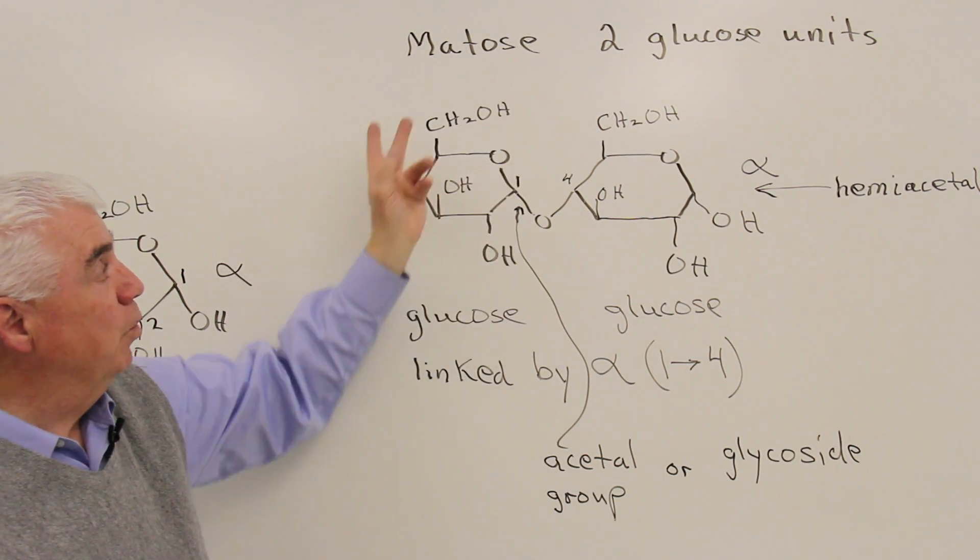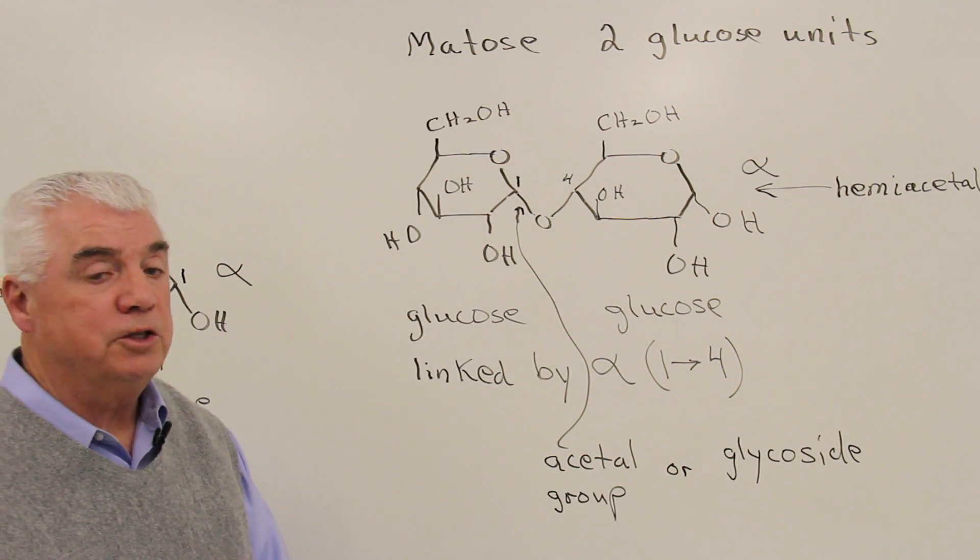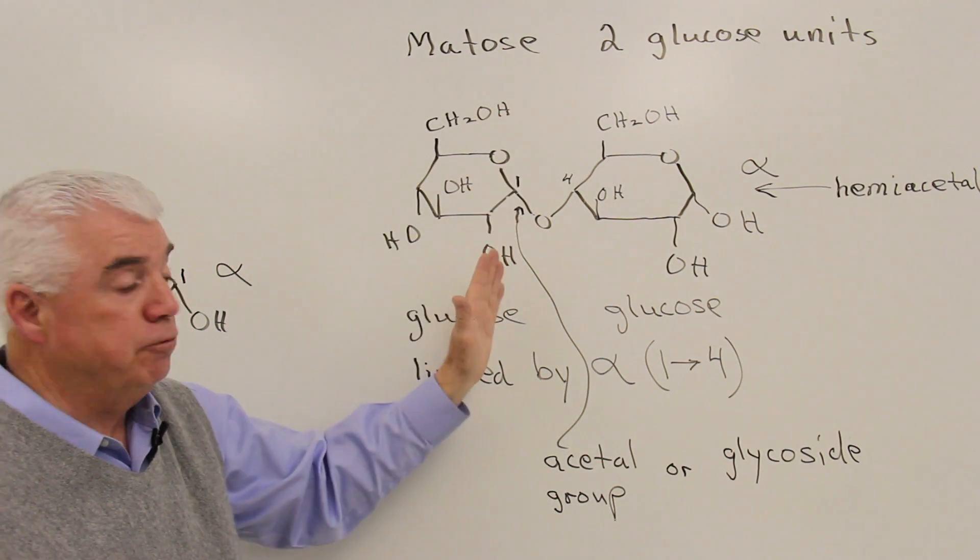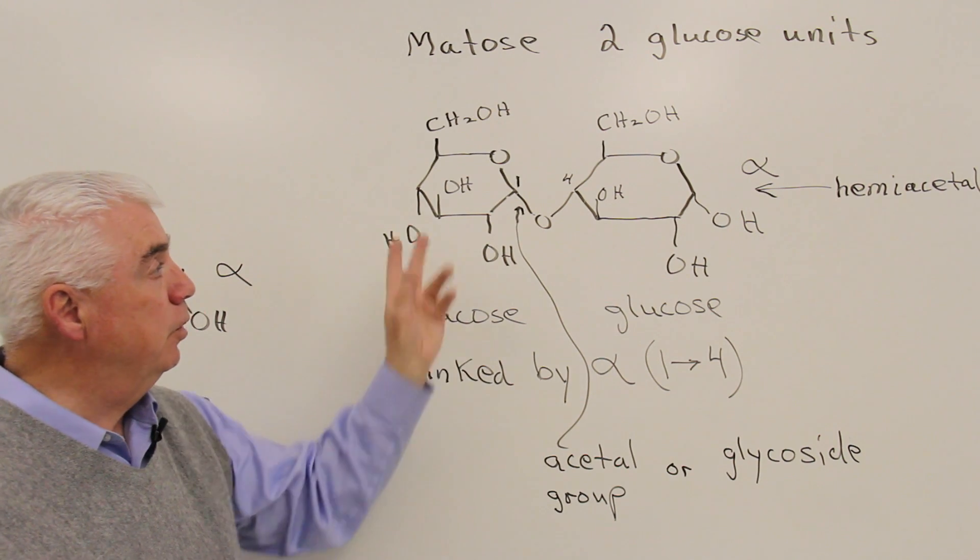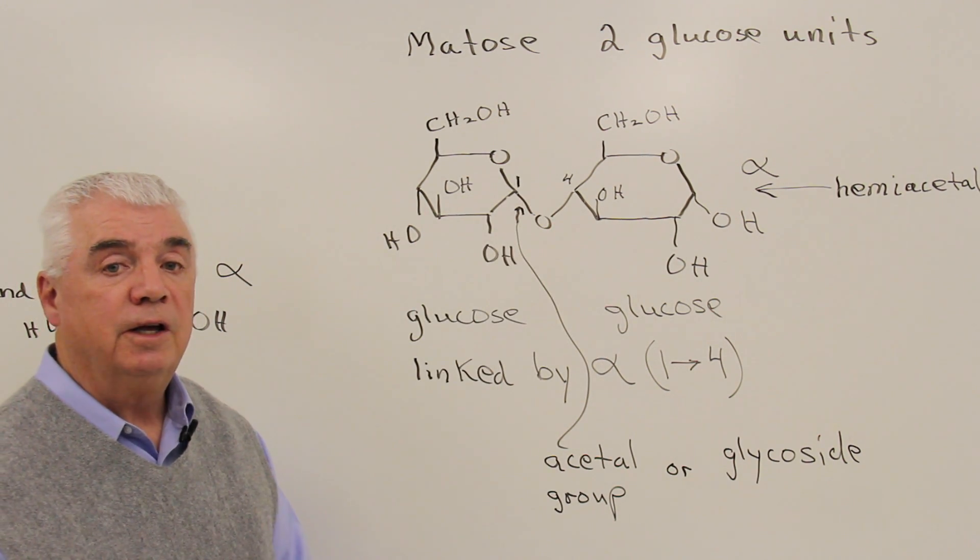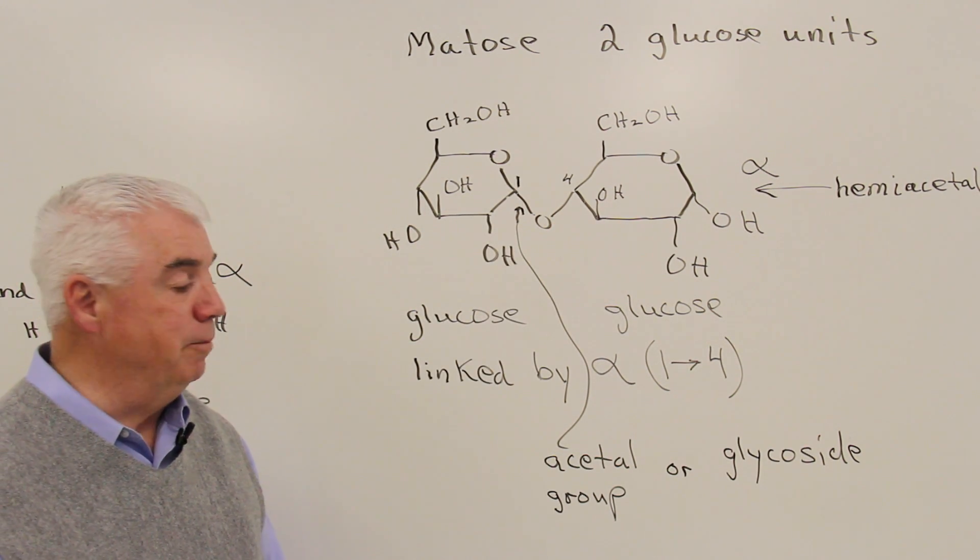When we take into our digestive system maltose, the body hydrolyzes this linkage. And we get two glucose units. They're absorbed into the bloodstream at that point.